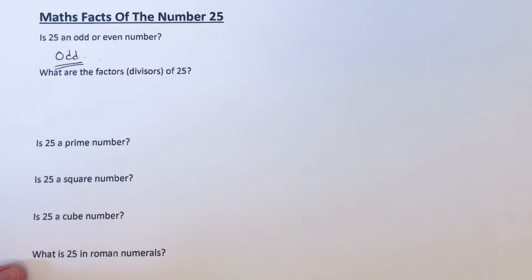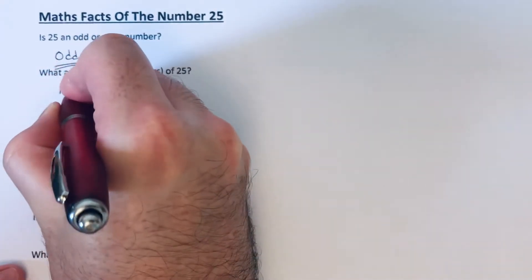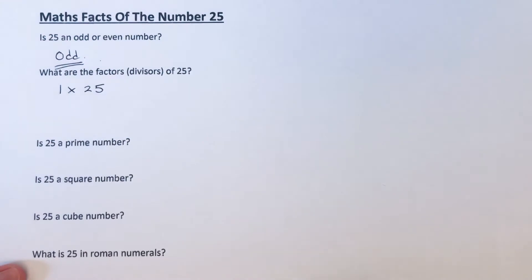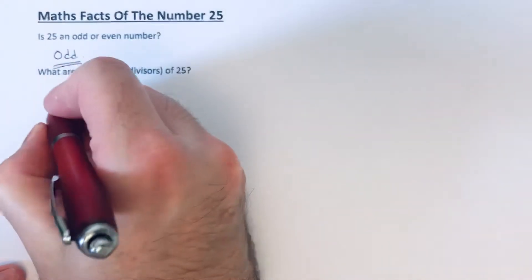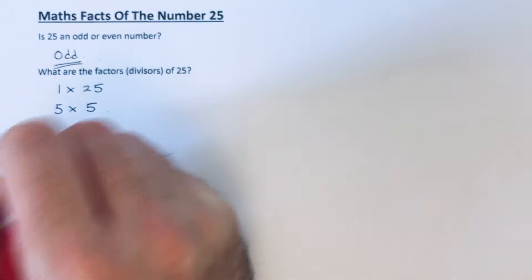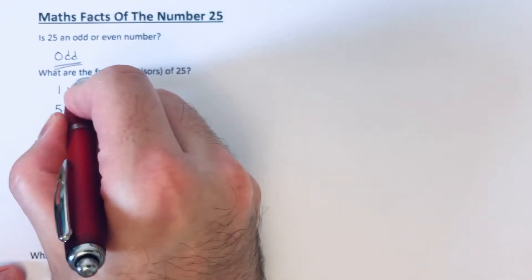Factors are the numbers which go into the number, so I'm going to start off with the 1 times table. 1 goes into 25 twenty-five times. 2 doesn't go into 25, 3 doesn't go into 25, 4 doesn't go into 25, but 5 does. So 5 goes in 5 times, and then I don't think there's going to be any more after that.